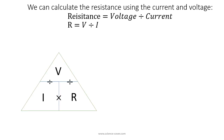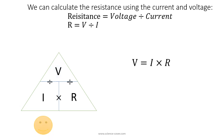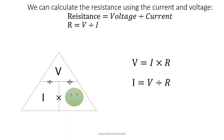I can place the equation into an equation triangle to help me rearrange it. If asked to calculate V, I cover up V and it tells me that V = I × R. If asked to calculate I, I cover up I and that tells me I = V / R. If asked to calculate R, I cover up R and I'm left with R = V / I.